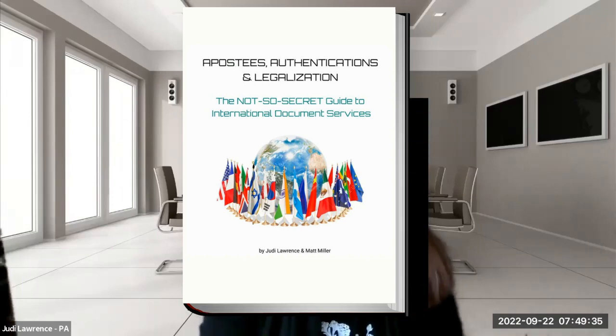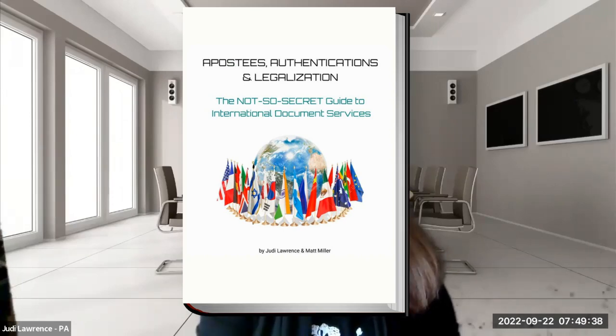There are two types of countries: there is a Hague country and a non-Hague country. There was a treaty formed in 1961. Some countries joined and some countries did not. And just for your own edification, sometimes some join right now — Saudi Arabia joined one month ago. So it doesn't mean that some country may not join tomorrow.